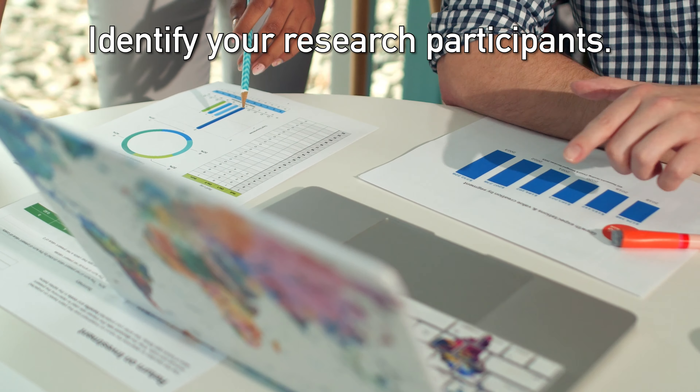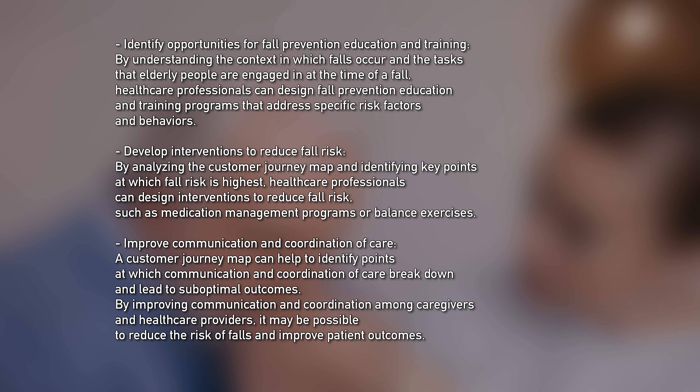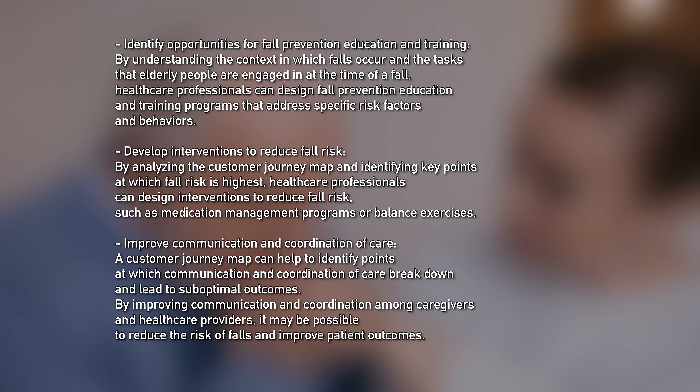There are several opportunities that can be identified through a customer journey map of elderly people with a higher falling risk who are engaged in dual-tasking. First, identify opportunities for fall prevention education and training by understanding the context in which falls occur and the tasks elderly people are engaged in at the time. Second, develop interventions to reduce fall risk, such as medication management programs or balance exercises, by analyzing key points at which fall risk is highest. Third, improve communication and coordination of care by identifying where breakdowns occur, which may reduce the risk of falls and improve patient outcomes.